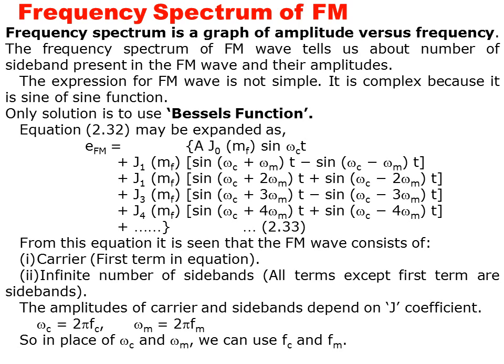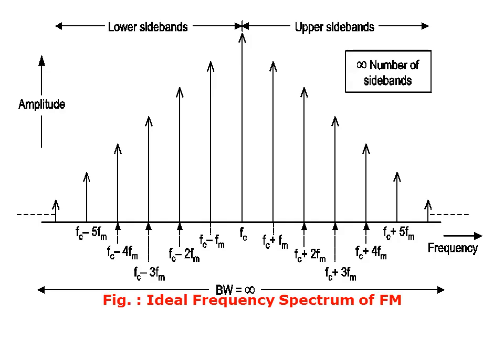There are four equations given by Bessel's function and so on. From these equations, it is seen that the FM wave consists of a carrier, which is the first term in the equation, and an infinite number of sidebands. All terms except the first term are sidebands. The amplitude of the carrier and sidebands depends on the J coefficient. In place of ω_C and ω_M we can use F_C and F_M. Looking at the spectrum shown in the figure, this is the ideal frequency spectrum of FM. The bandwidth of the signal is infinite, and the figure shows the amplitude of the lower and upper sidebands.